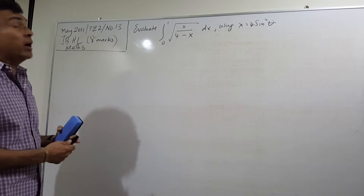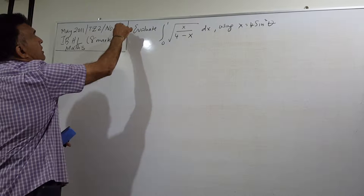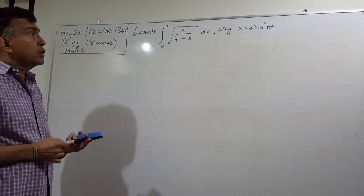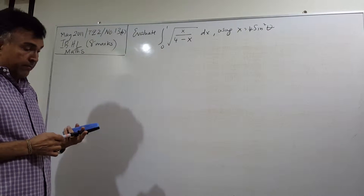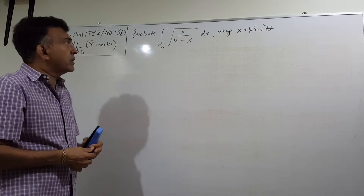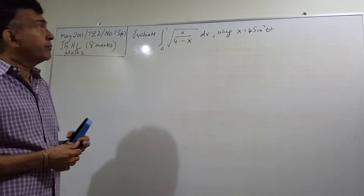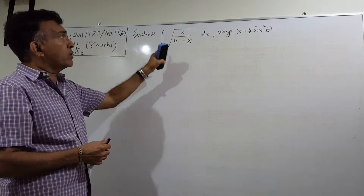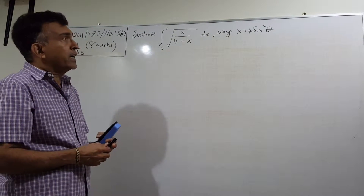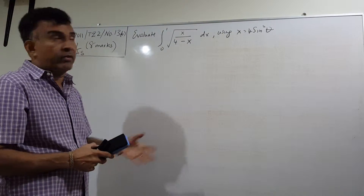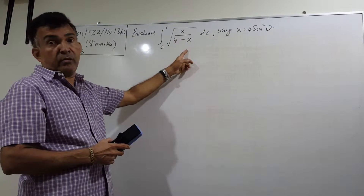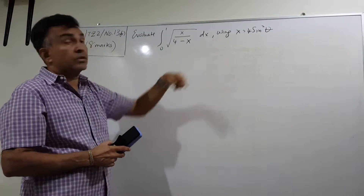This is Part B of the problem and it carries 8 marks. We are asked to evaluate the integral with limits 0 to 1 of the square root of x over (4 minus x), and we are asked to use the substitution x equals 4 sine squared theta.